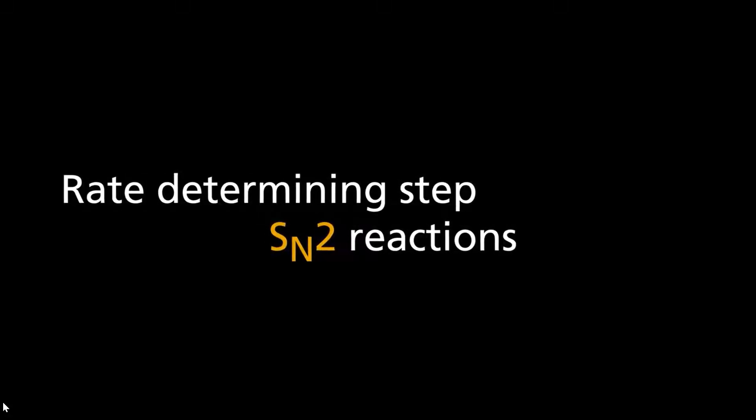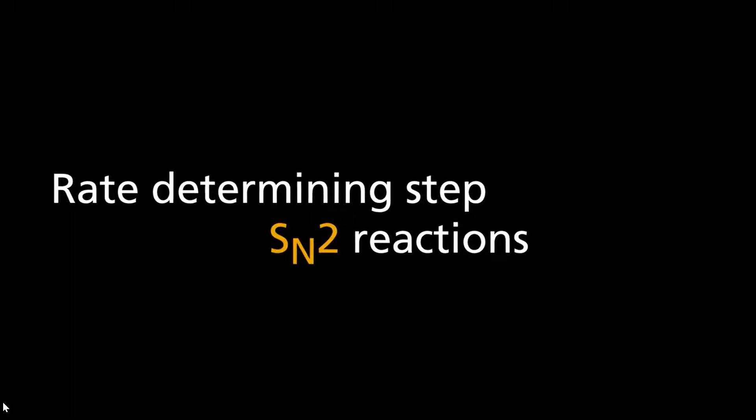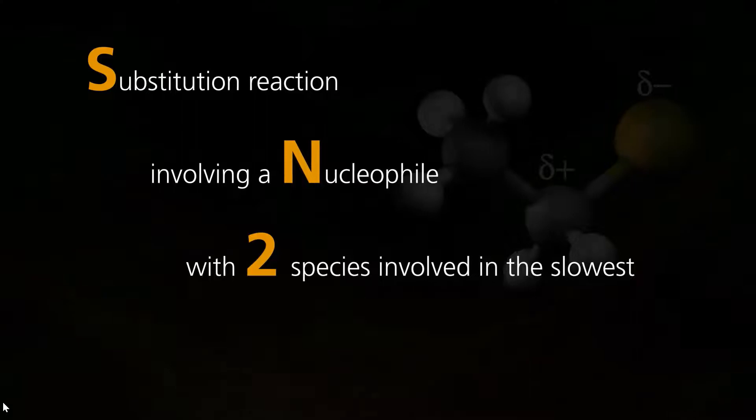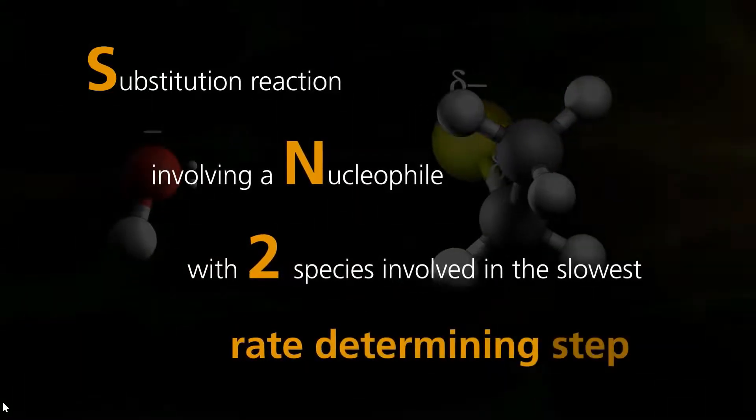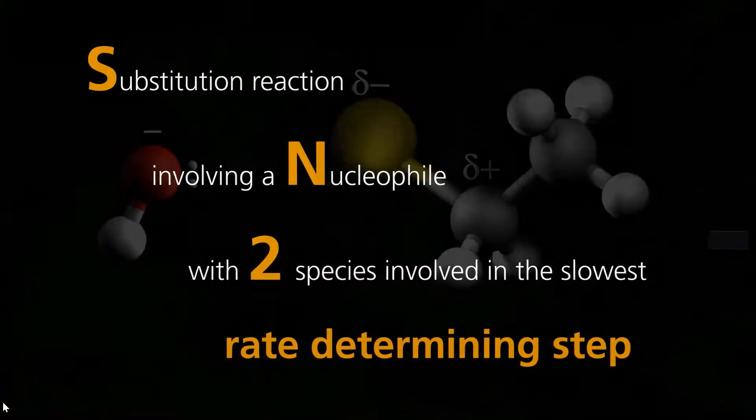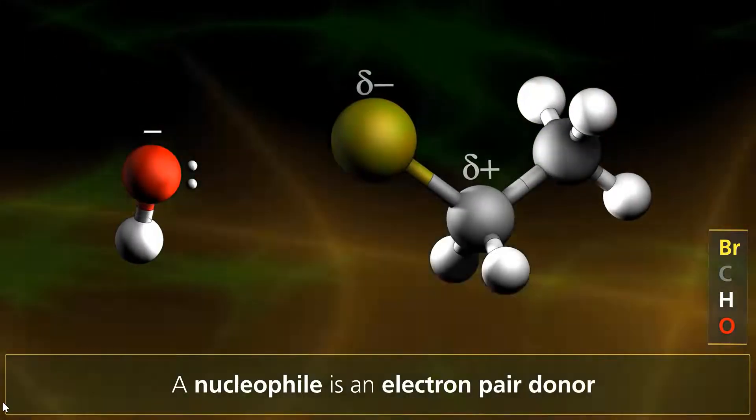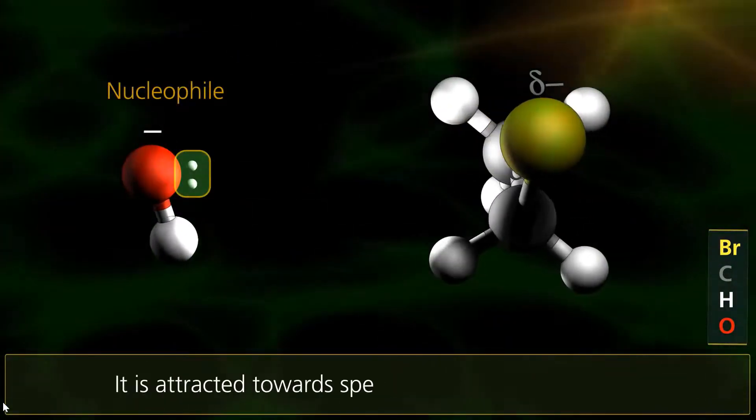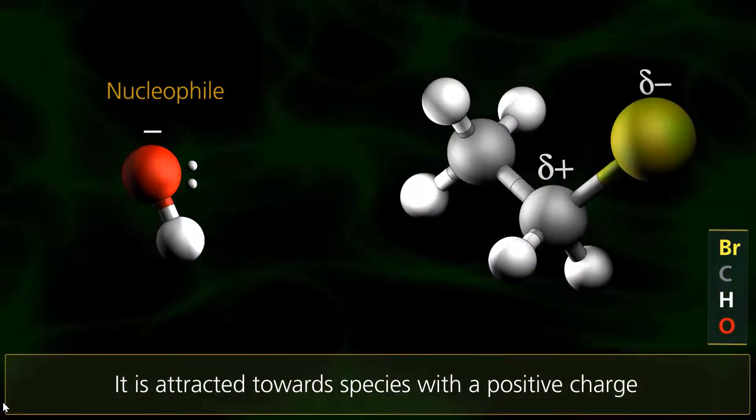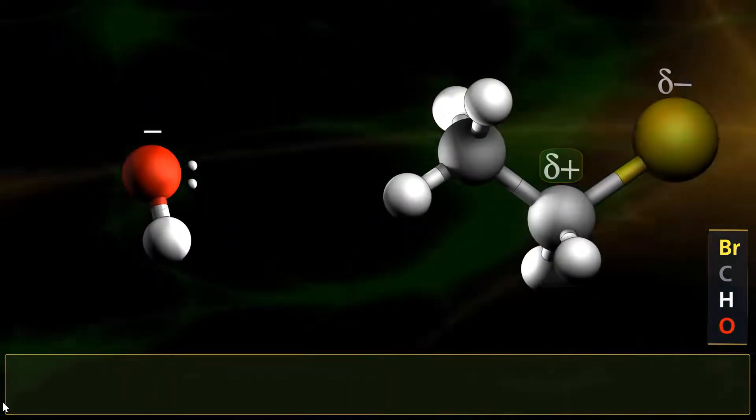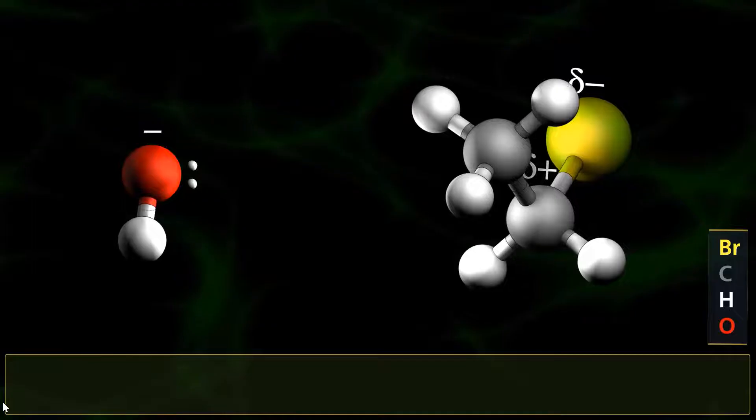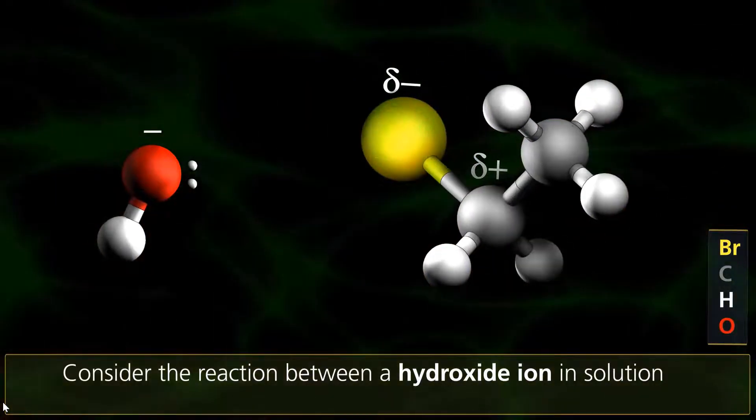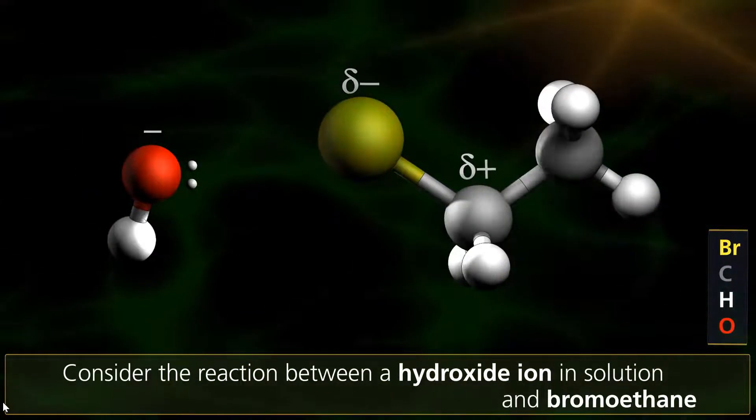Primary halogeno alkanes undergo SN2 reactions, where the S denotes a substitution reaction. The N shows the reaction involves a nucleophile. 2 is the number of species involved in the slowest rate-determining step. A nucleophile is an electron-pair donor. It is attracted towards species carrying a full or partial positive charge, with which it can form a dative covalent bond.